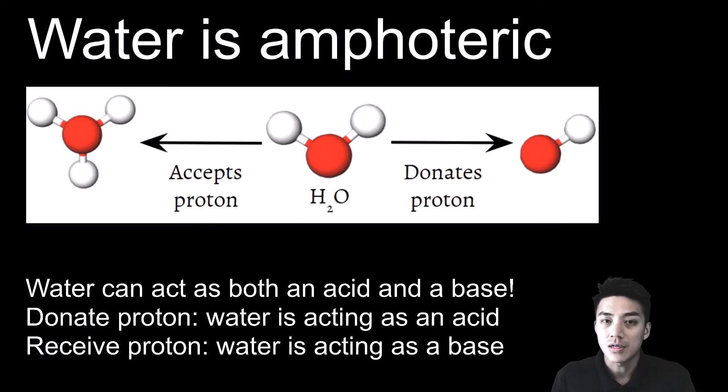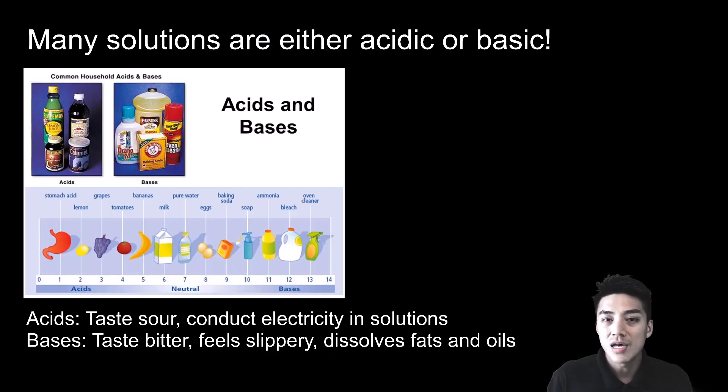Water is amphoteric, which means it can act as both an acid and a base. When it donates a proton or a hydrogen, it's acting like an acid. When it receives a proton or when it receives a hydrogen, it's acting like a base. Everyone knows that water is neutral and has a pH of 7, which is why it's amphoteric. It can act as both an acid and a base.